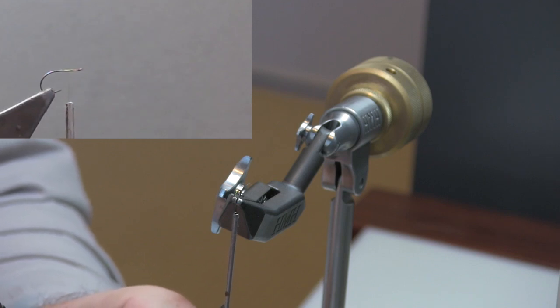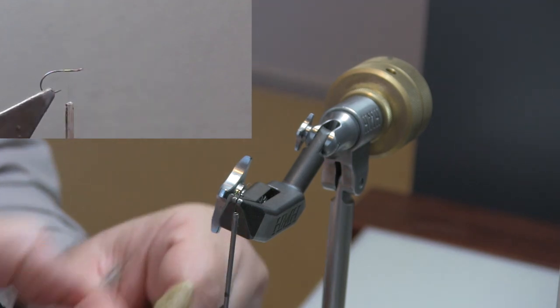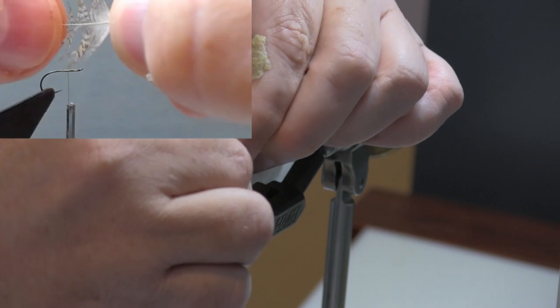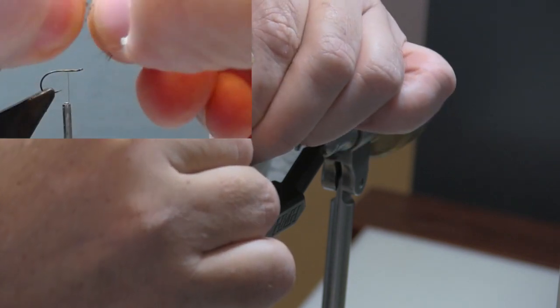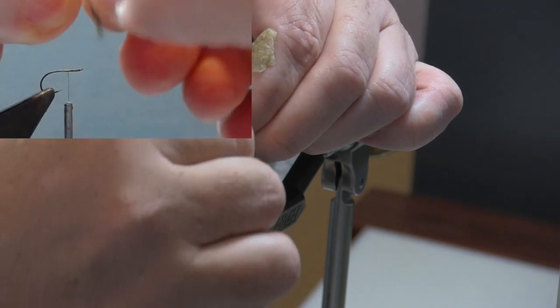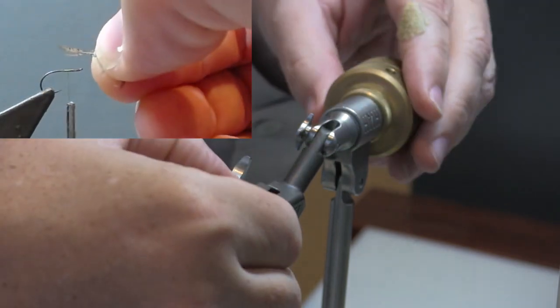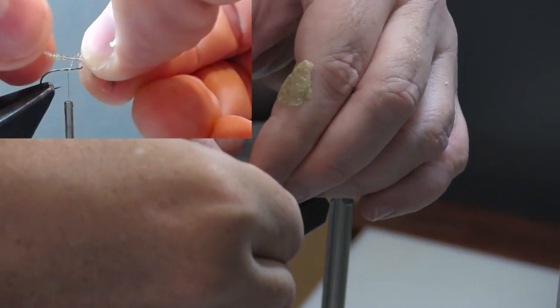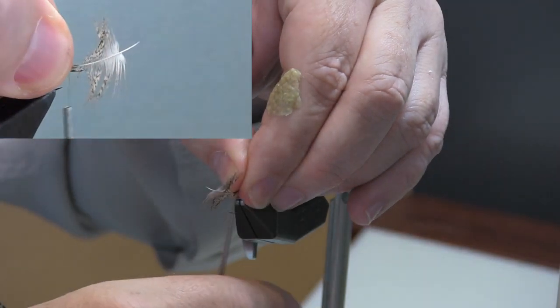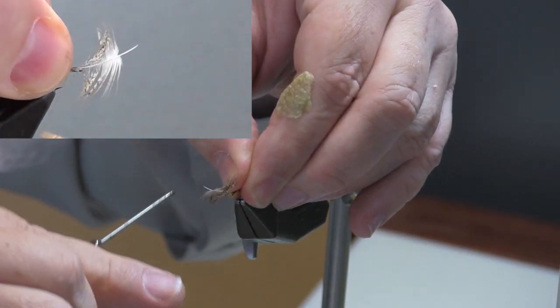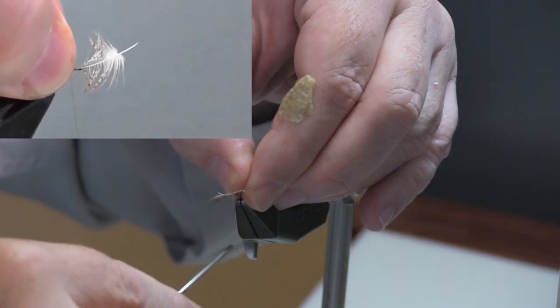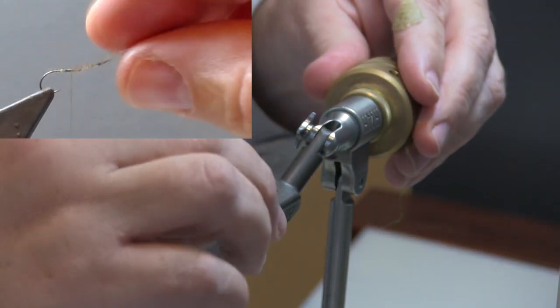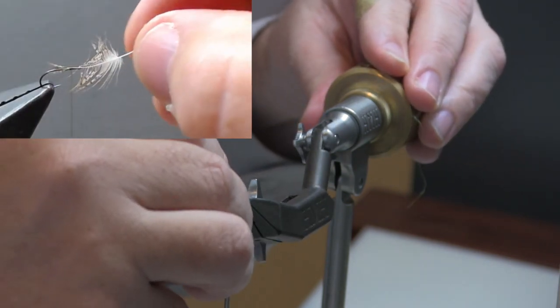I've taken a partridge feather and I have stripped away the fluff and you can see that I've also pulled down the majority of the fibers. Now normally the easiest way to tie this in is with a pinch wrap and I'm tying this in upside down so it's going to rest concave. If you are a newer tyer and you have a problem with using a pinch wrap, then you can just trap the feather on top of the hook with your thumb. And then you can make about two or three turns and that will hold that down rather nicely.